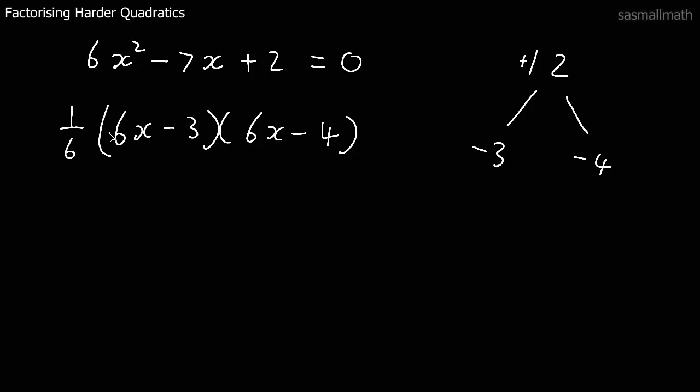Now, if we look at this, we've got a factor that can come out of there. We can take three out of this and we can take two out of this. Well, three times two will make the six. So let's do that. Three times two. Taking the three out of this, that's going to be two x minus one. And taking the two out of this, that's going to be three x minus two.